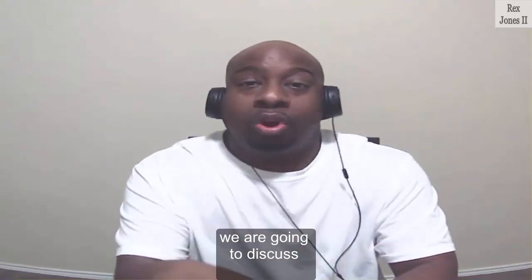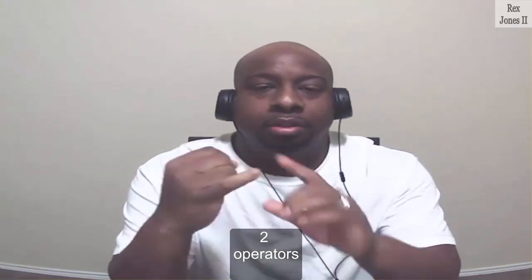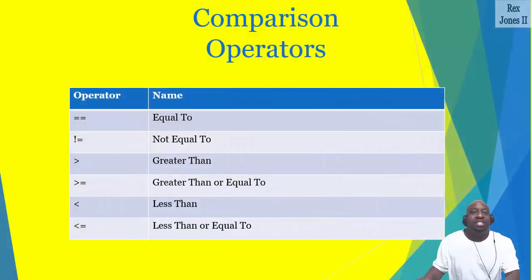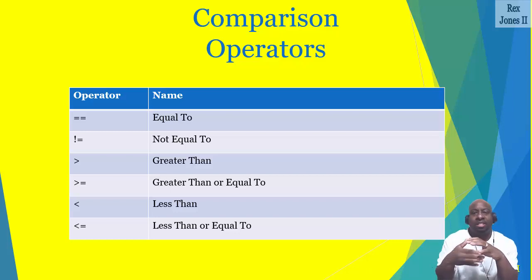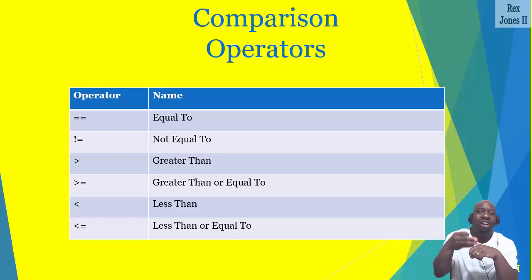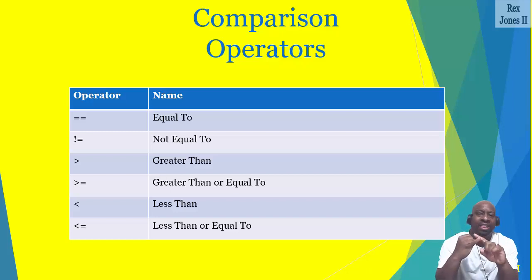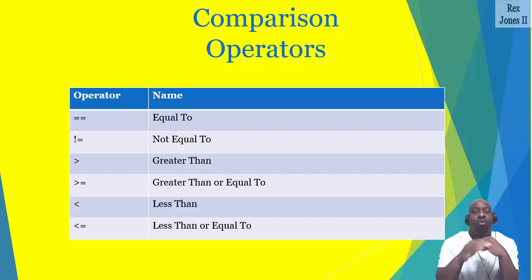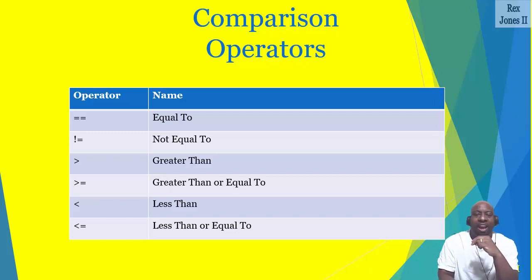In this tutorial session we are going to discuss two operators: comparison and logical. Here is a list of six operators. First is the equality operator, which is an equal sign for equal to. Then we have the inequality operator for not equal to, followed by four more operators: the greater than operator, greater than or equal to operator, less than operator, and less than or equal to operator. Each of these operators are used to compare two values and then evaluate both values.